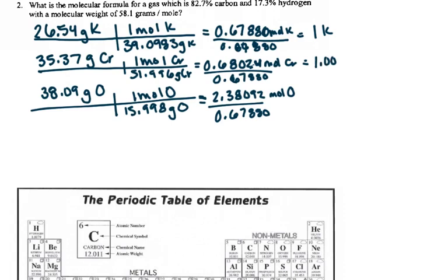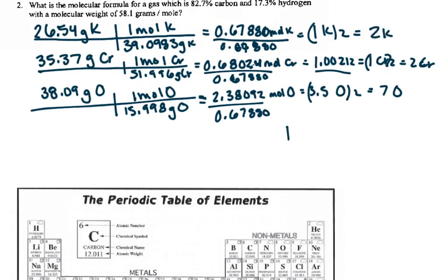Chromium is 1.00212, which we need whole numbers. Since that's really close to 1, we're going to round it to 1. For oxygen, we get 3.5. So 3.5 is not roundable. I need to multiply 3.5 to get a whole number. I can multiply by 2, which gives me 7 oxygen. Whatever I do to 1, I have to do to the other. So 2 chromium and 2 potassium.